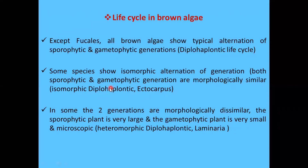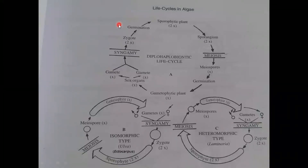In some species the two generations are morphologically dissimilar. In this heteromorphic diplohaplontic life cycle, the sporophytic plant is very large while the gametophytic plant is very small and microscopic. This occurs in Laminaria. Brown algae thus show a clear-cut alternation of sporophytic and gametophytic generations, also referred to as the diplohaplontic life cycle.